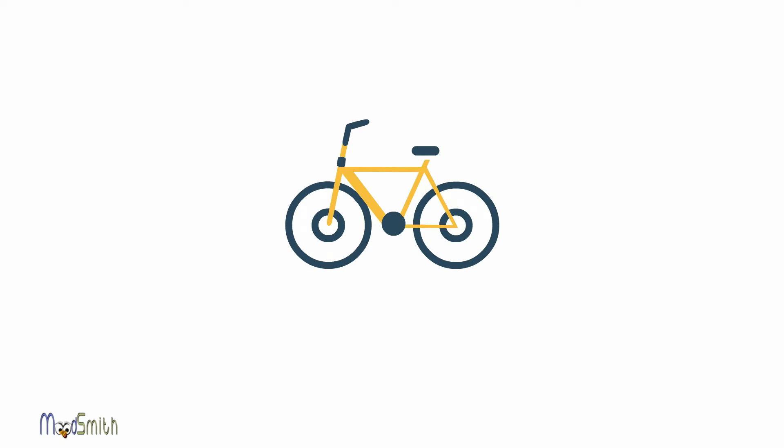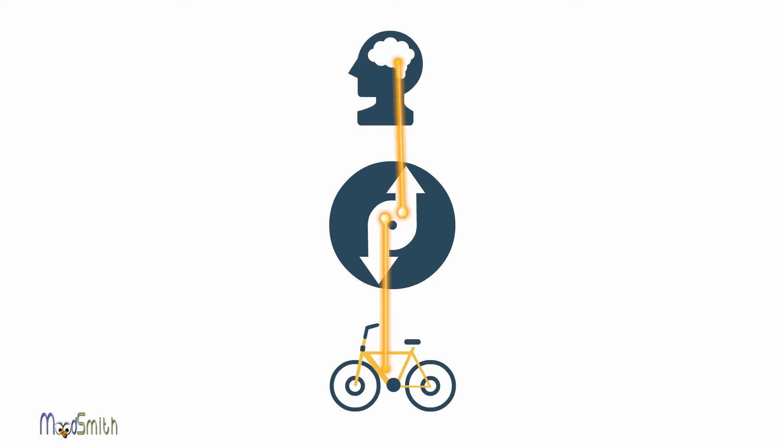Habits are like riding a bike. Once you learn, the skill is always available to you. When you first learn to ride a bike, signals are sent back and forth to your brain. How do I keep this steady? How do I stop myself from falling off?